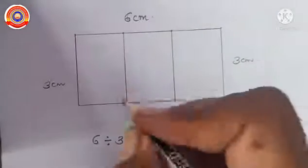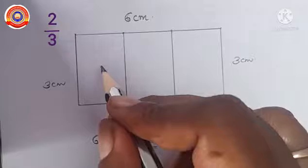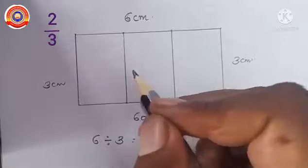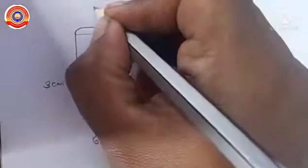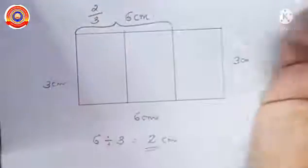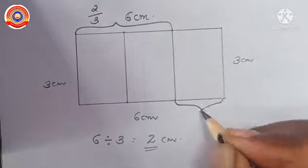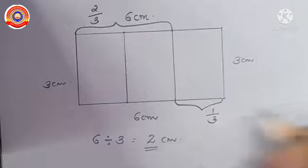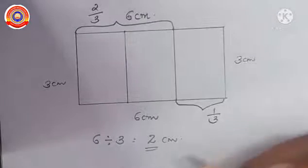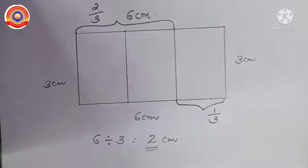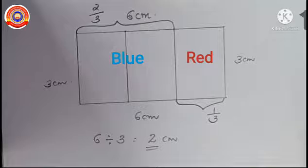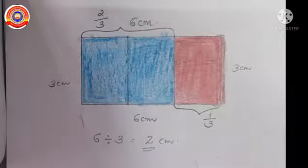Next, we have to find the 2/3 part of the rectangle. These two parts form the 2/3 part of the rectangle — that is 2 parts out of 3 equal parts, so it will be 2/3. The remaining part forms 1/3 — that is 1 part out of 3 equal parts, so it will be 1/3. Next, color the 2/3 part blue and the 1/3 part red. We can color like this. Did you understand this?